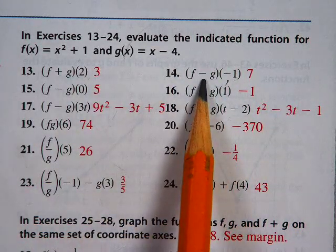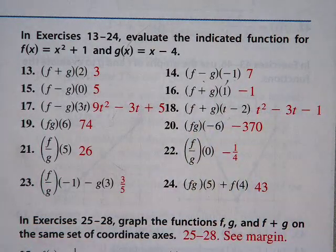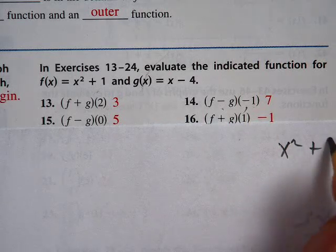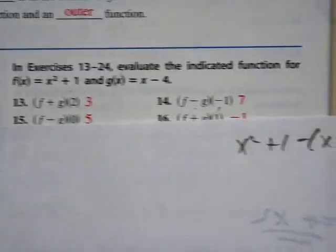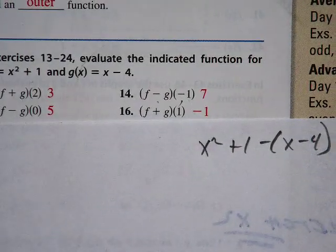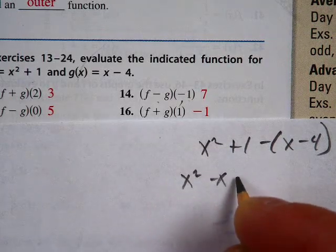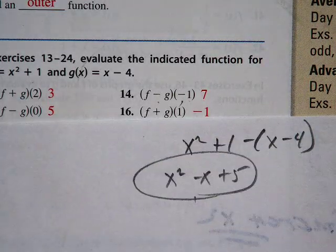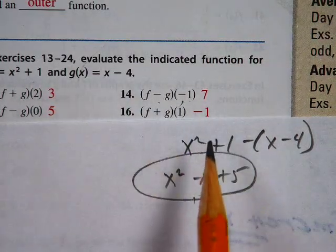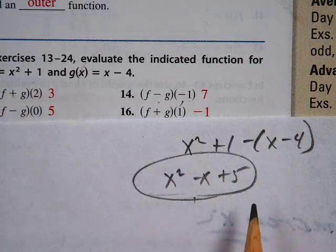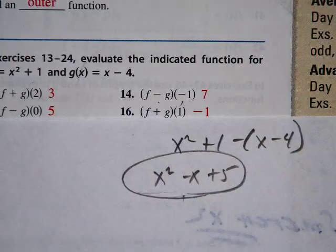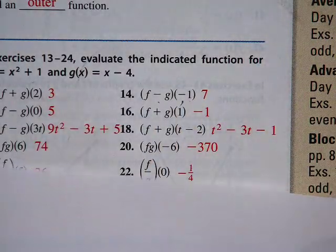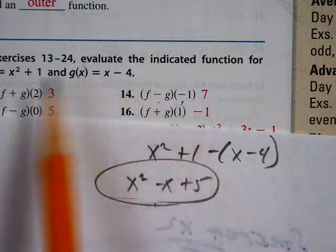If I did something like this, 14, F minus G of negative 1. There's actually a couple different ways to do that. You could take negative 1, put it in for each one, and then subtract those values. Or you could make a rule for F minus G of X. So we would do X squared plus 1 minus X minus 4. Then I would just simplify X squared minus X plus 5, and then I could just plug in negative 1. Regardless of whether you do it in terms of numbers or make a rule for the overall function, you're going to get the same thing.